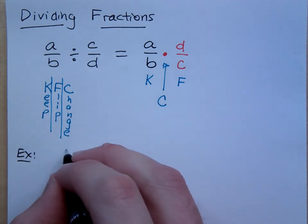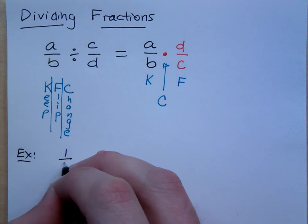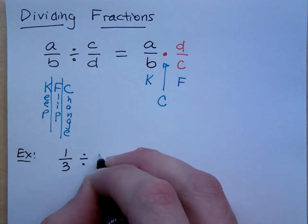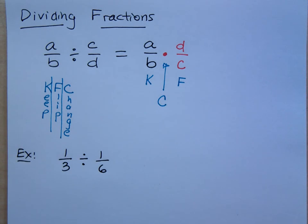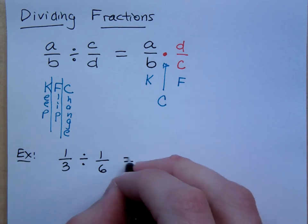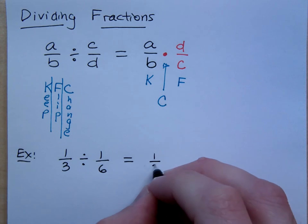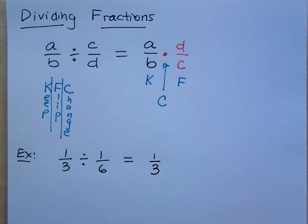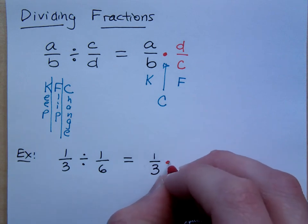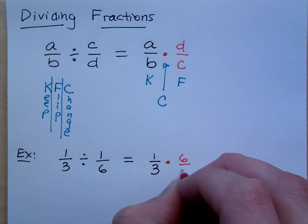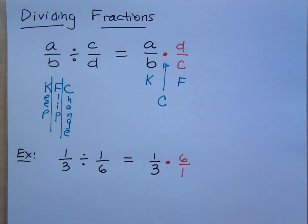So, if I were to say one-third divided by one-sixth, what this is really asking is, how many times does one-sixth go into one-third? Well, if you do what I said to do with the KFC, multiply times the reciprocal, you keep the first guy the same. But then you have to flip this guy. So the reciprocal of one over six is just six over one. You just flip it over. Now we have a multiplication problem.